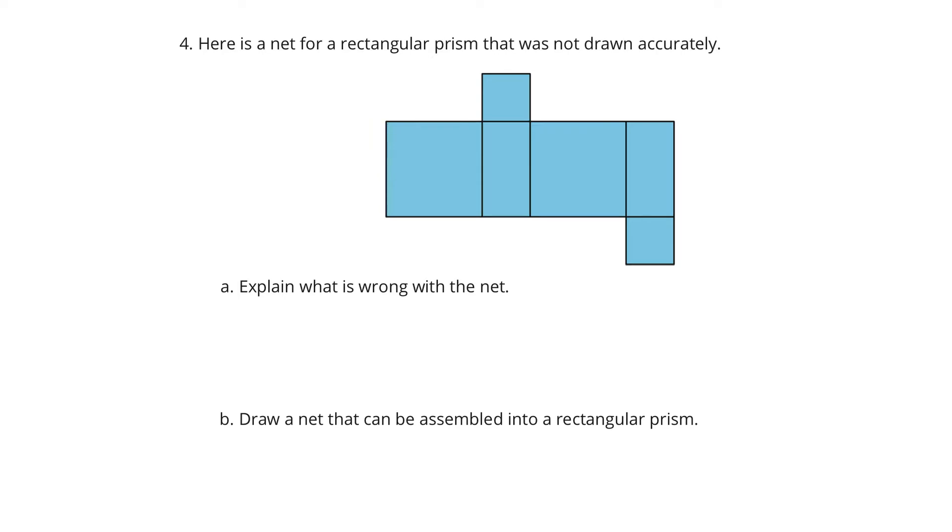Well, the problem here is if you folded this, the two small squares are not the right size to close the three-dimensional figure. This here and this here, they're not going to close the figure. They don't line up here. So squares will not close the figure.